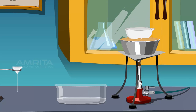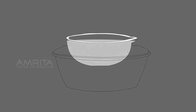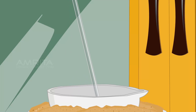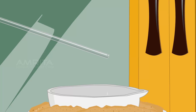Heat the solution in the china dish on the sand bath while stirring using the glass rod to avoid crust formation on the side of the dish. Don't allow the solution in the dish to boil. Continue heating till the solution is reduced to about one third of its original volume. Take out a drop of the solution using the glass rod and cool it by gently blowing on it. The appearance of tiny crystals on the glass rod shows that the crystallization point has been reached.